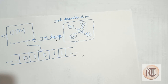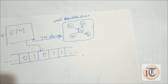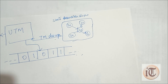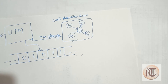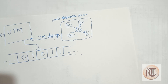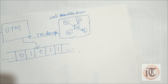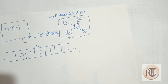So the main purpose of a Universal Turing Machine is: if we want to check a Turing Machine with some particular input, we use a Universal Turing Machine for that purpose. This is all about the Universal Turing Machine.